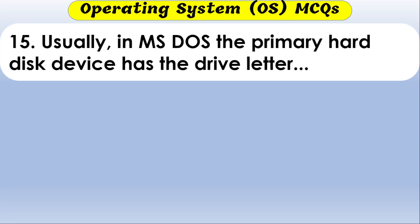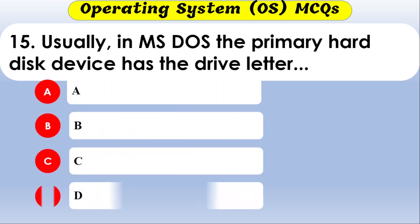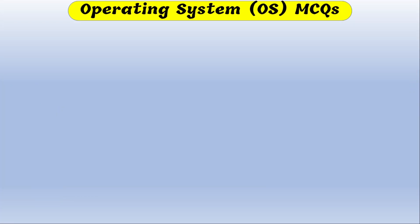In MS-DOS, the primary hard disk drive letter is — the options are A, B, C, or D. The correct option is C — the primary hard drive in MS-DOS is typically assigned the letter C.